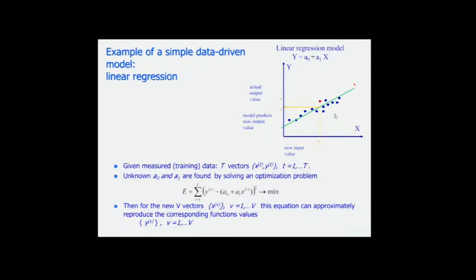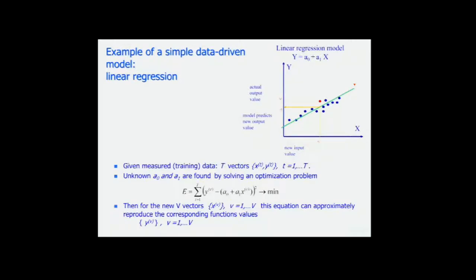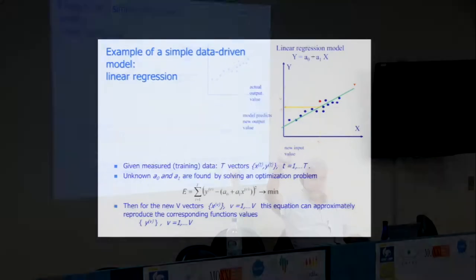So how do we use this model? We can forget about the blue training points. If a new input comes in, we use this equation — the green line — and calculate the assessment of Y. Maybe there will be an error; maybe the actual Y is at the red point. Models make errors. The green model makes errors even on training data because it doesn't go through any of the points — it goes somewhere in between. On average it's good, but for each point it's slightly erroneous.